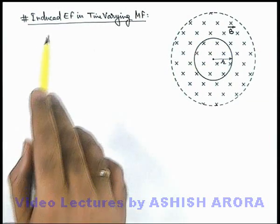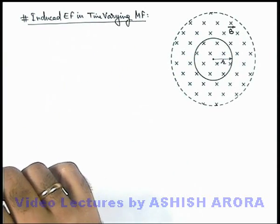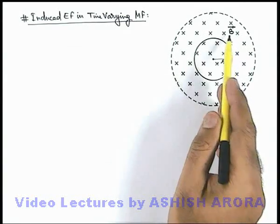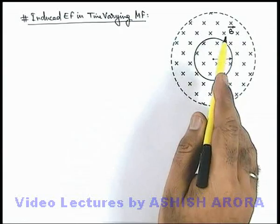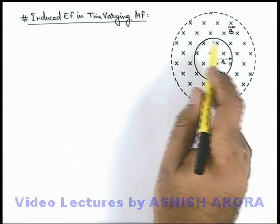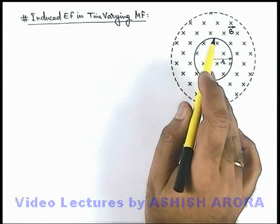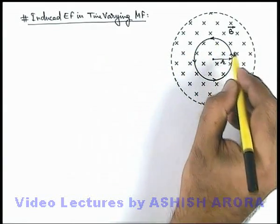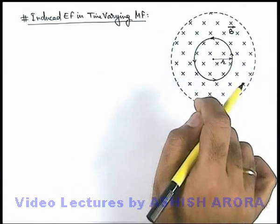Let us now discuss induced electric fields in time-varying magnetic fields. We have a cylindrical region like a solenoid in which a magnetic induction B exists. If this magnetic induction starts increasing with time and a coil is placed there, in case of increase in magnetic field, an anti-clockwise current is induced in the coil so as to oppose the inward increment of magnetic induction by Lenz's law.